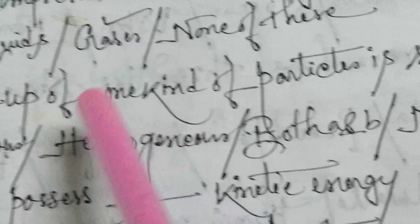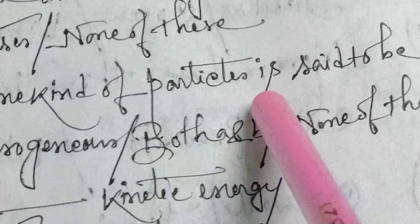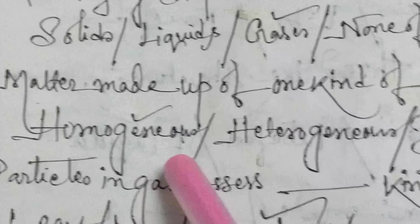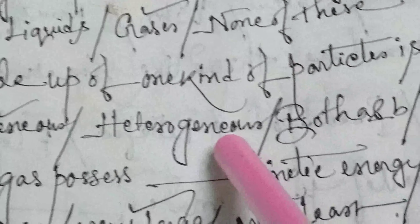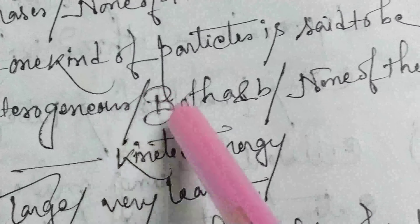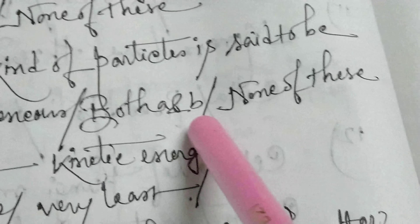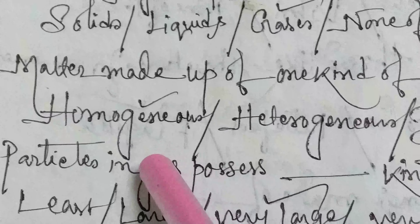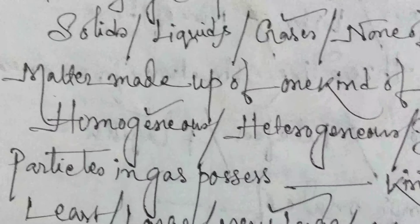Next, matter made up of one kind of particle is said to be: homogeneous, heterogeneous, both A and B, or none of these. The answer is homogeneous.